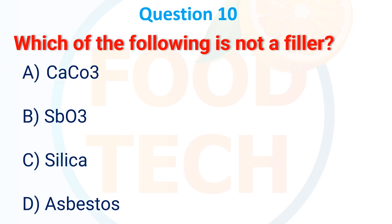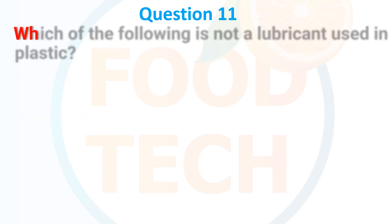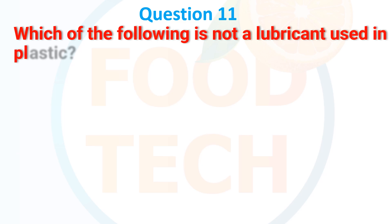A) CaCO₃, B) SbO₃, C) Silica, D) Asbestos. The answer is B) SbO₃. Which of the following is not a lubricant used in plastic?